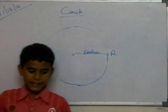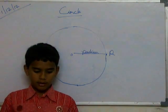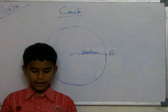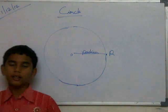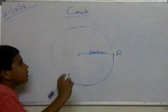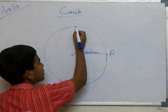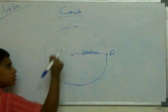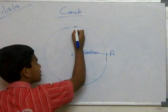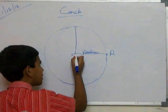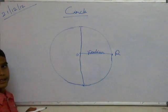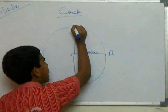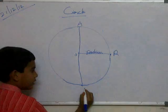Now diameter. Diameter of a circle is the line segment joining two points on the circle through its center. It is known as diameter. Like this — we should put a point from here to here, draw a straight line, and label it A and B.